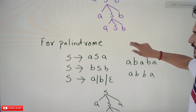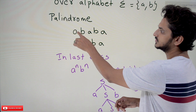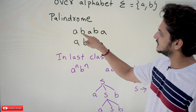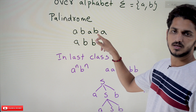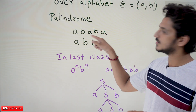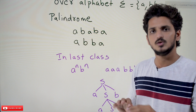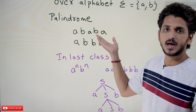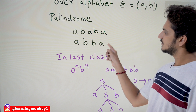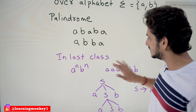Let's try to understand how to apply this to palindromes. The palindrome logic is: if the first character is A, the last should be A. If the second character is B, the second-to-last should also be B. That's an even palindrome: A B B A — last is A, second is B, second-to-last is B. For an odd palindrome, there is a character in the middle, such as A A B B A, where in between you can have A or B.